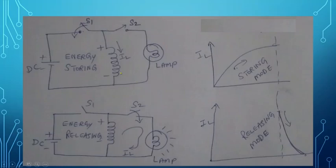Suppose we connect an inductor in parallel with a lamp to a DC source. We have two switches S1 and S2. When we close S1, the inductor gets charged — energy from the battery is stored in the inductor. You can see the current direction flowing through it. Looking at the graph, during storing mode the current is slowly and gradually increasing to its maximum level. This is known as the storing mode.